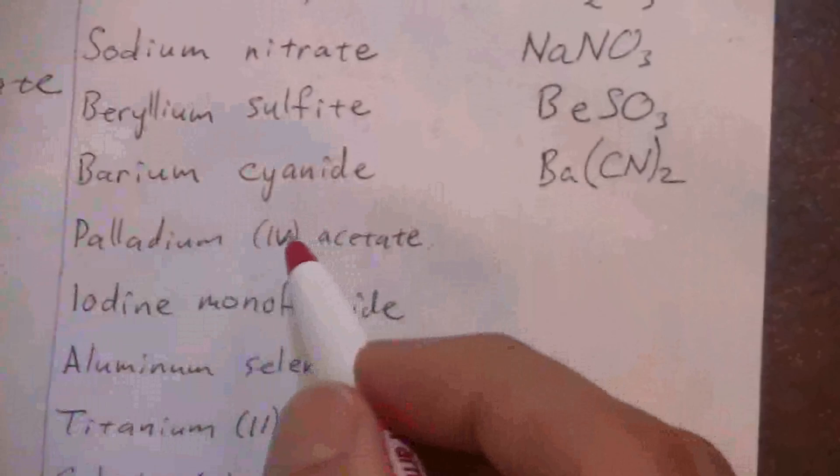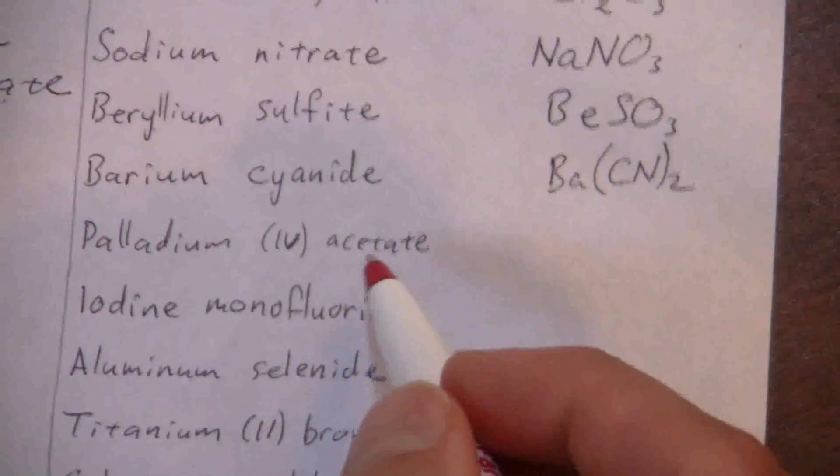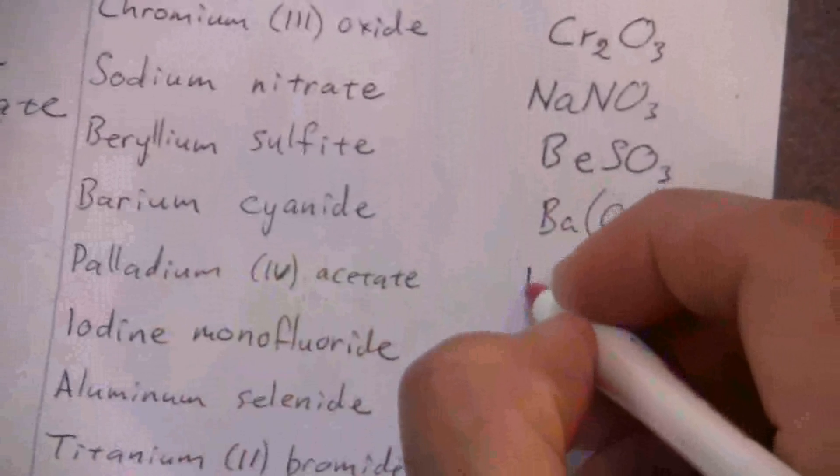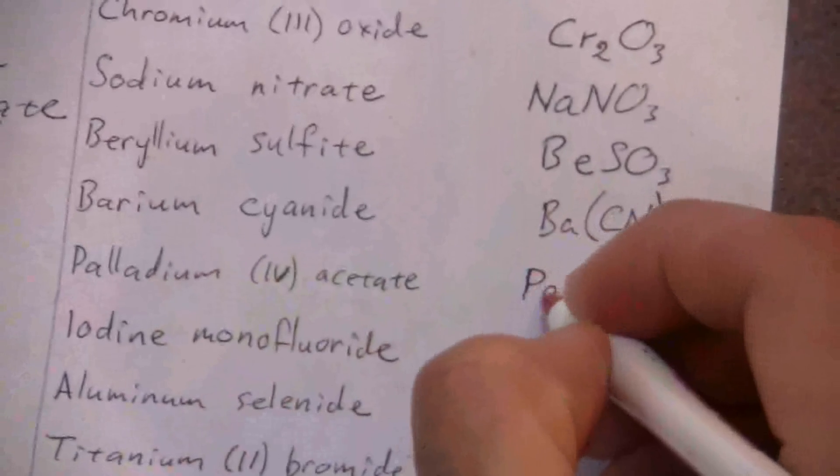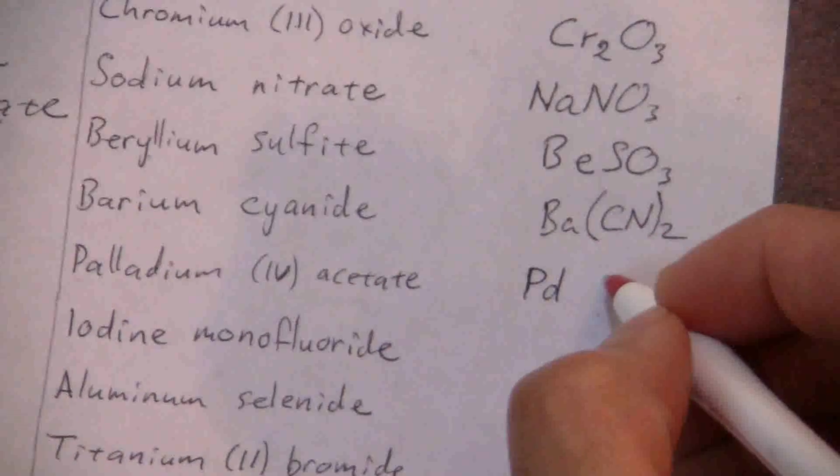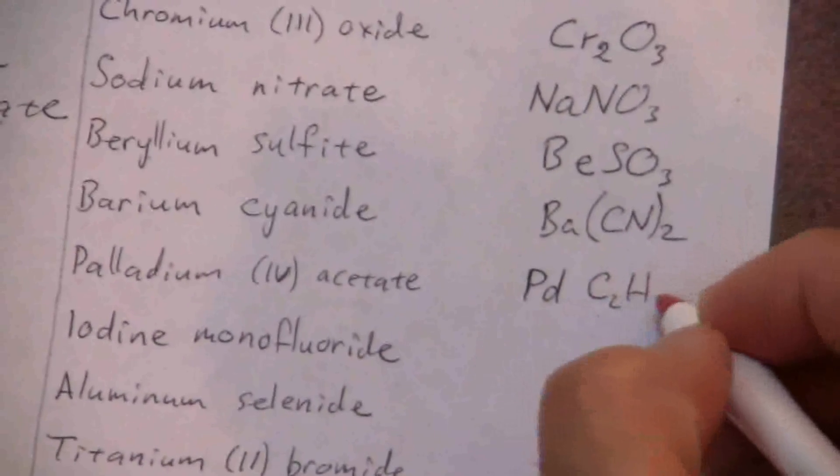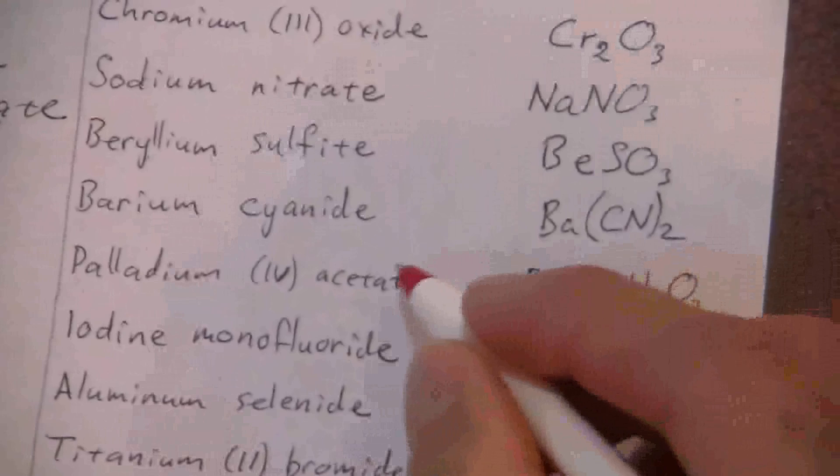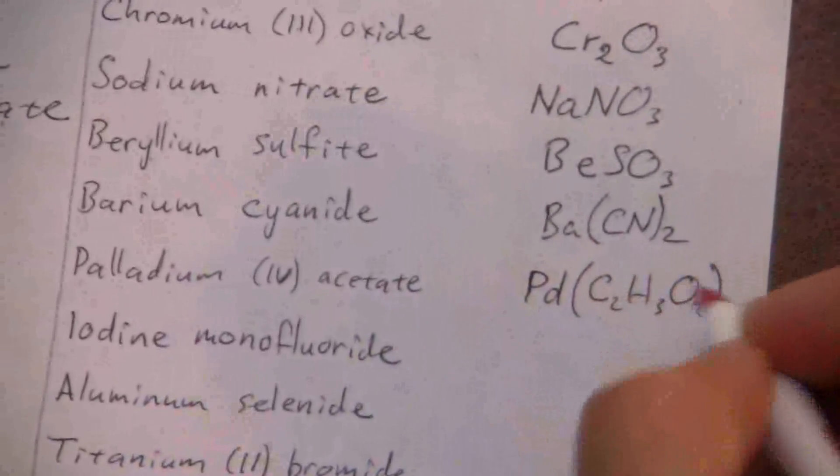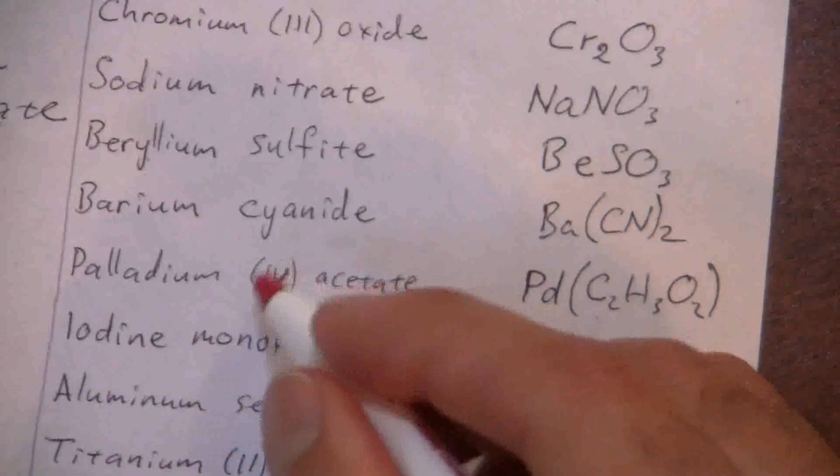Here we have palladium (IV) acetate. Four is the charge of the palladium, and then acetate is C2H3O2 with a negative one charge. So I need a negative four to balance out the positive four - I need four of those: Pd(C2H3O2)4.